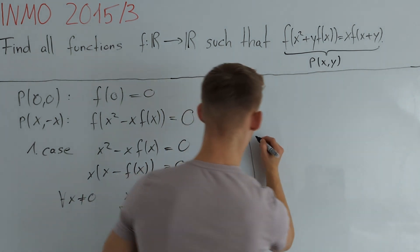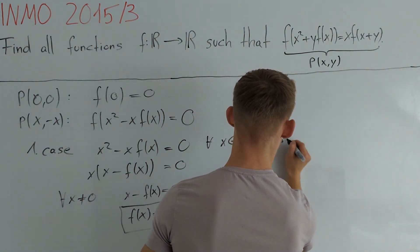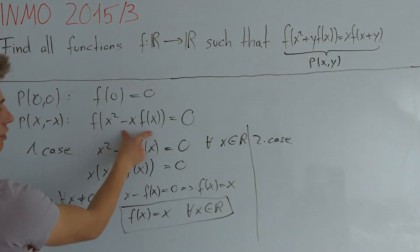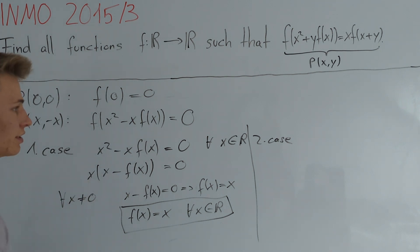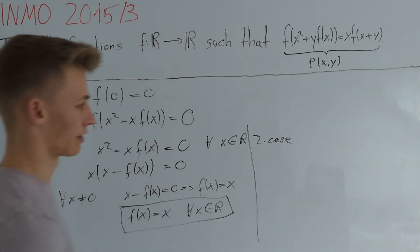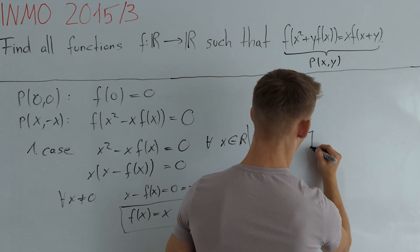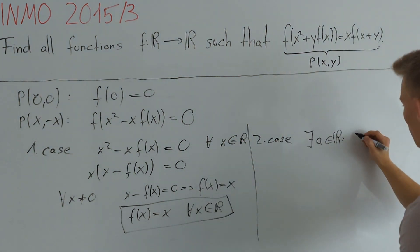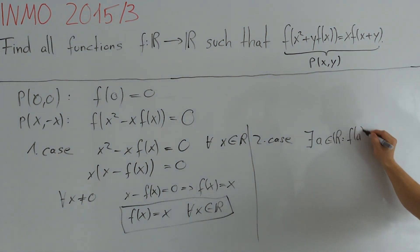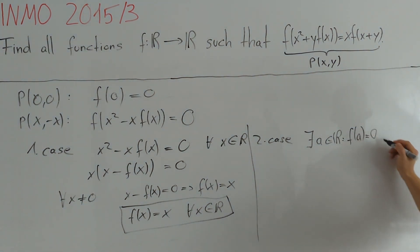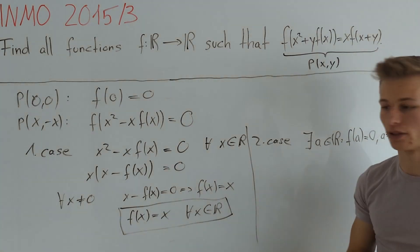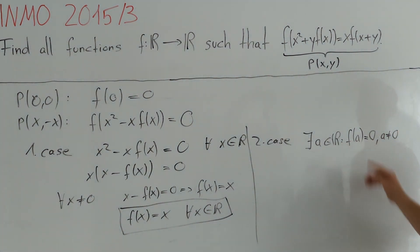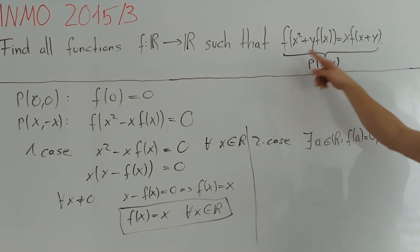In the second case, this argument is not always equal to 0. Therefore we can find some a from the real numbers such that f(a) = 0 but a ≠ 0. We want to make use of the fact that f(a) = 0, so we plug in x = a into our equation.